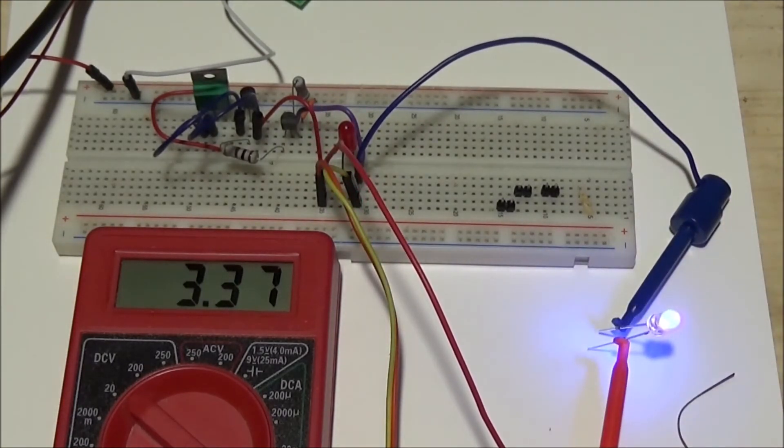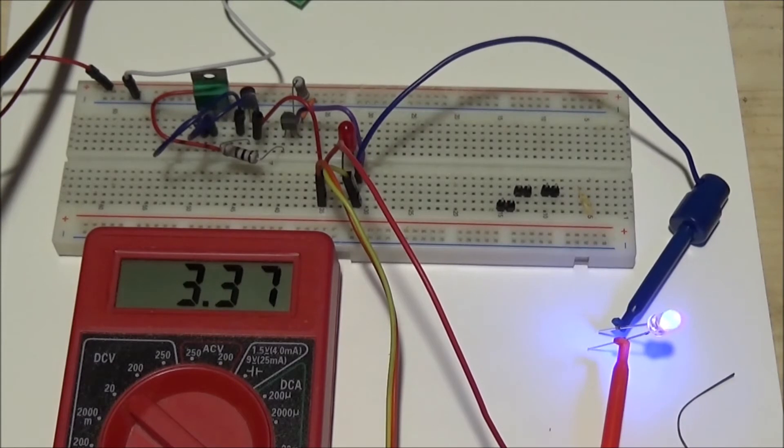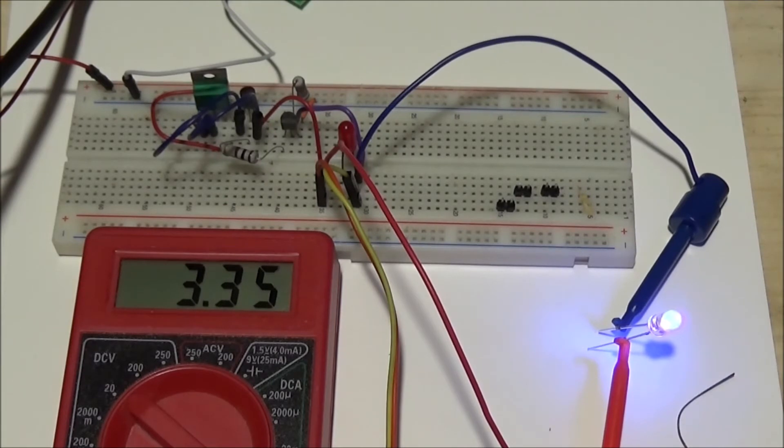Okay, this is an ultraviolet LED. The forward voltage drop at 23 milliamps is 3.36 volts. If you're using a red LED, they usually come out about 2.1 and so forth. It's good to know this if you're doing circuit design.